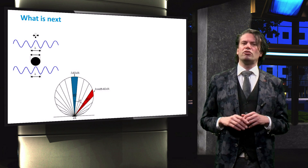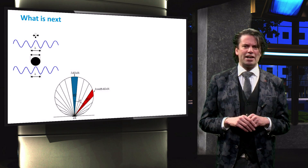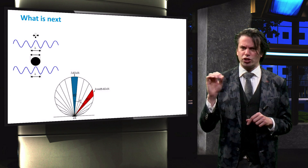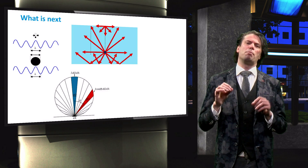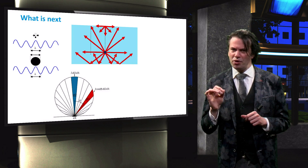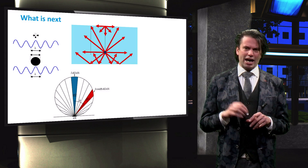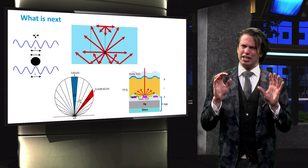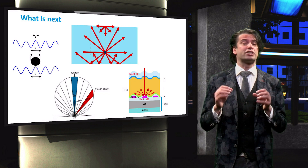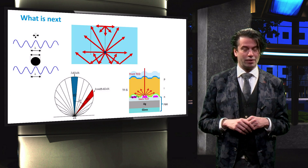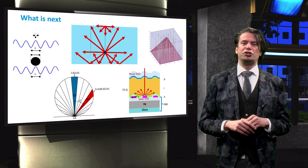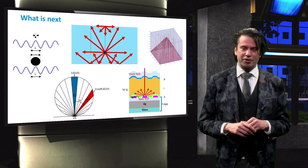We will look into the concepts of étendue and an ideal Lambertian scatterer. We will discuss the limit to absorption enhancement by scattering, known as the Yablonovitch limit. And we will see that textured interfaces are not the only way to achieve scattering in solar cells. Finally, we will take a modeling approach to achieve scattering optimization.